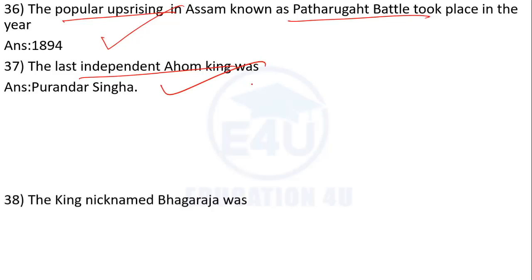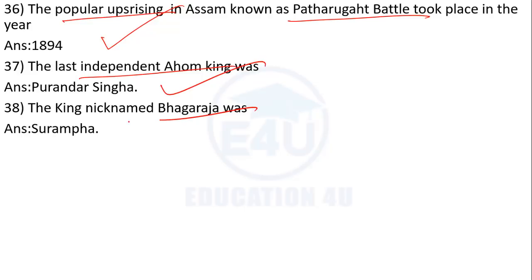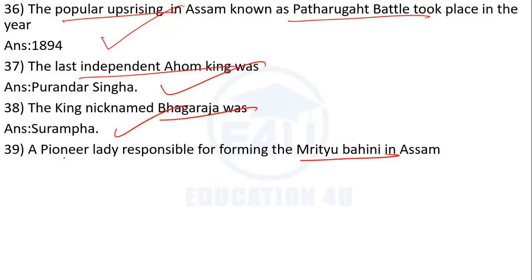The last independent Ahom king was Purandar Singha. The king with the nickname 'Bhaga Raja' — who was nicknamed Bhaga Raja? The answer is Suramtha Raja, nicknamed Bhaga Raja. The organization called Mrityu Bahini — who established it among freedom fighters? The answer is Pushpalata Das.